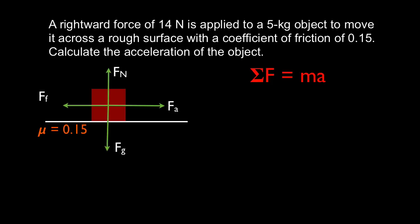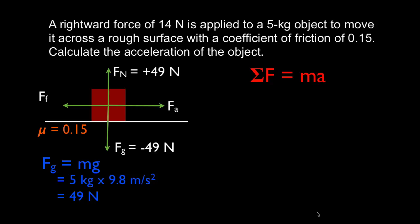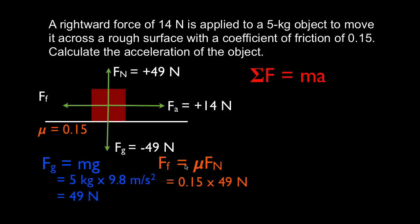We have a coefficient of friction of 0.15, and we'll need that to calculate the friction force. F equals MG: 5 kilograms times 9.8 gives us 49 Newtons, so the gravitational force is minus 49 and the normal force is plus 49 Newtons. The applied force is plus 14 Newtons. To find the friction force, we use the equation: force of friction equals mu times the normal force. That's 0.15 times 49 Newtons, which gives us 7.35 Newtons. So the friction force is minus 7.35 Newtons.